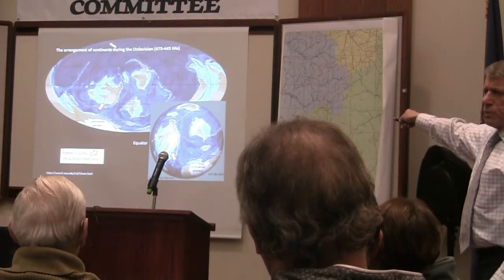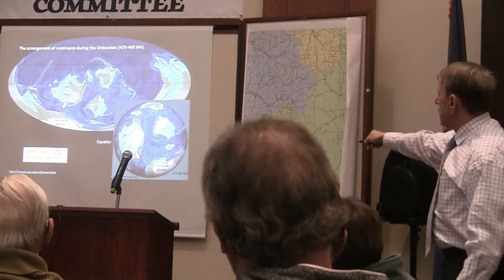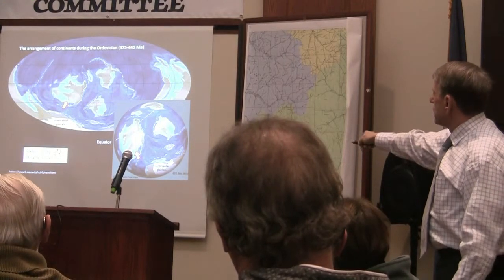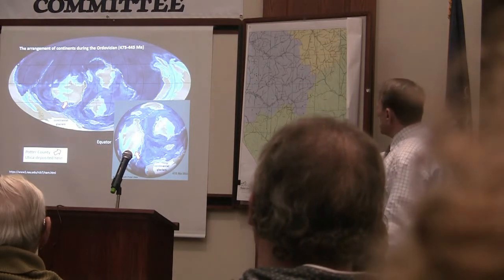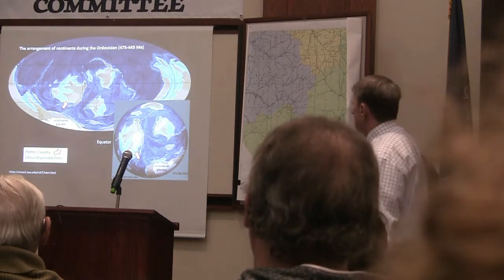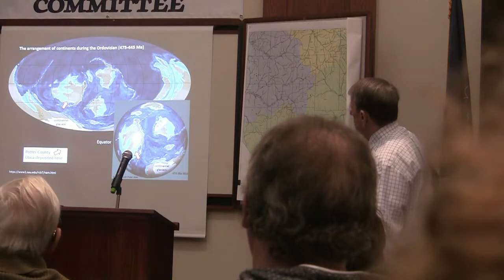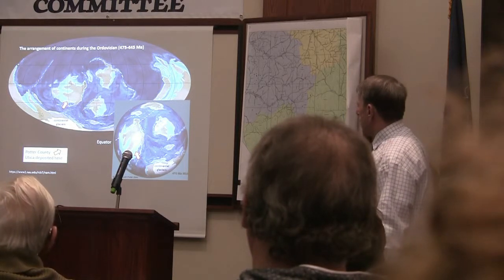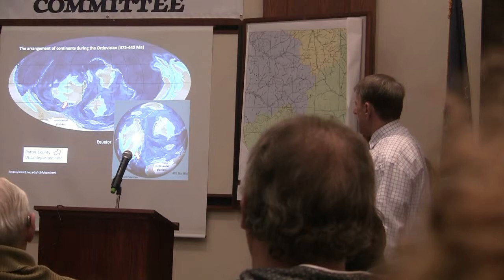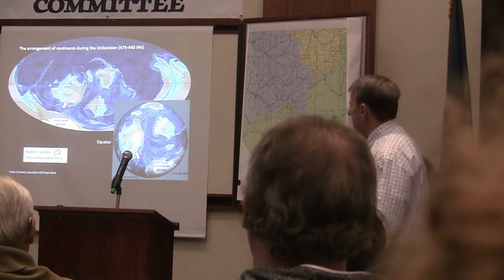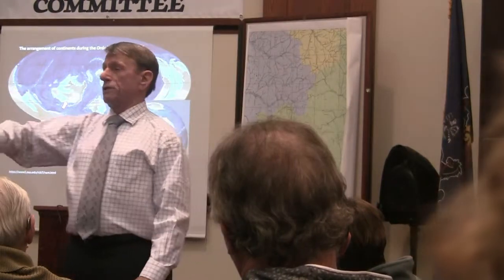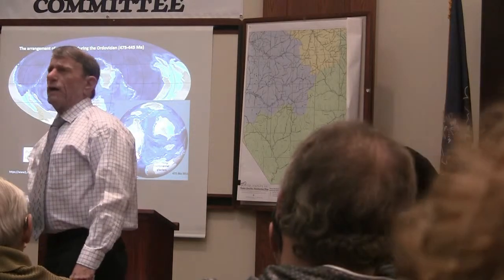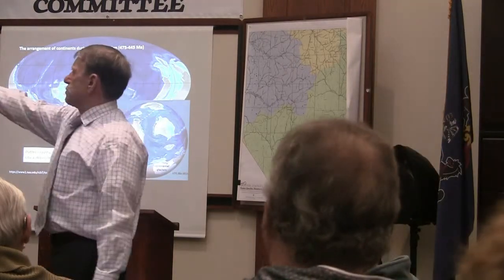Here we are. This is what the Earth really looked like — the entire globe. There's the equator right there. Here's Potter County. There's the Utica being deposited. In terms of its position right now, if we put the Earth into its present coordinate system so that Potter County is pointing north, you can see that way back when the Utica was deposited, Potter County was in the southern hemisphere.